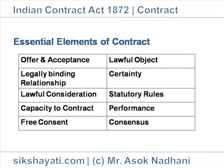In later classes, we will explain each of these terms in more detail. The essential elements are: offer and acceptance, legally binding relationship, lawful consideration, capacity to contract, free consent, lawful object, certainty, statutory rules, performance, and consensus.